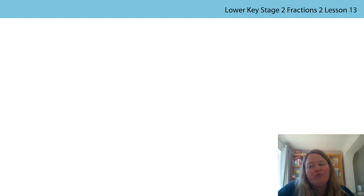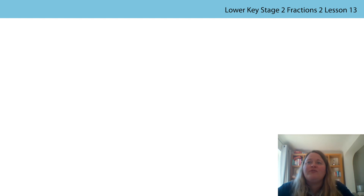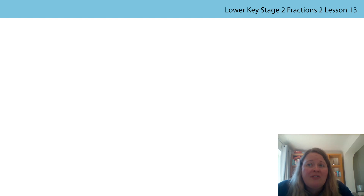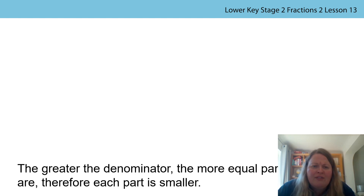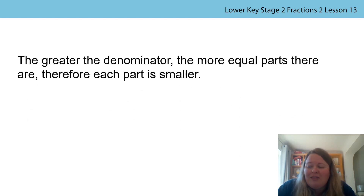What have we proved by filling our container up by one third and one quarter? We have proved that one third is larger than one quarter, as the whole has been split into three equal parts. Whereas when we measured out a quarter, we split our whole into four equal parts. Therefore, a quarter is smaller than a third. This links back to our stem sentence: the greater the denominator, the more equal parts there are, and therefore each part is smaller.